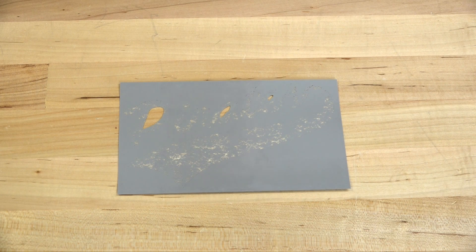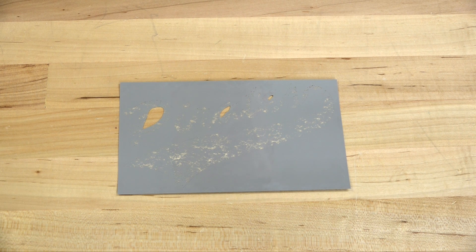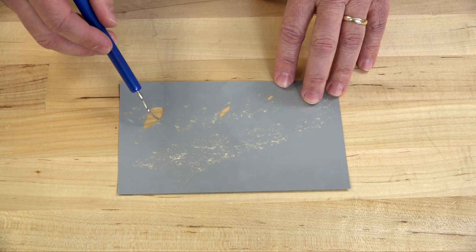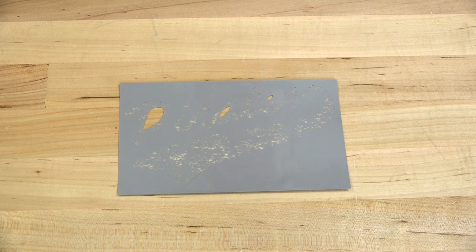Okay, so we've removed our transfer from the laser bed, and now we're prepared to weed it so we can take it to the heat press and apply it to the garment. As you can see, it has punched out our cavities, so that'll save us some time when it comes to the weeding process.